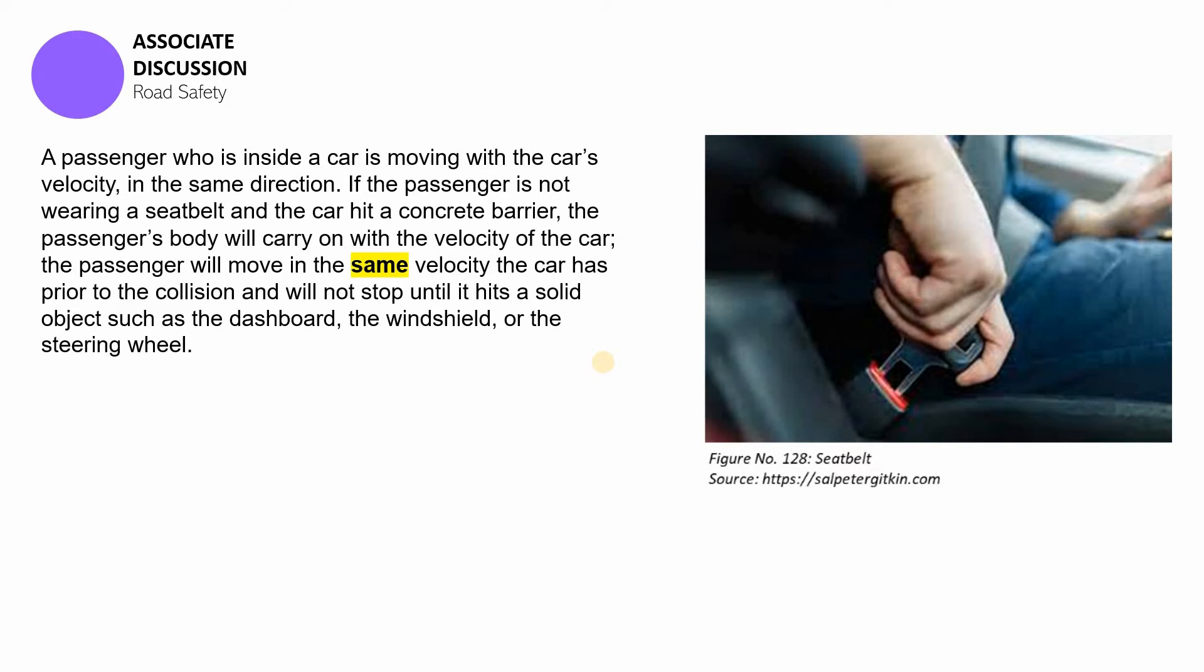So when the car suddenly stops, say for instance completely by accident, it hit a concrete barrier, the body inside the car must actually stop as well, right? But without a seat belt, that won't happen. The body inside the car is bound to move at the same speed that the car had before the collision. So if the car was moving at 120 kilometers per hour and then it suddenly hit a concrete barrier, the body inside the car is set to move with the same velocity, 120 kilometers per hour. It cannot just stop.